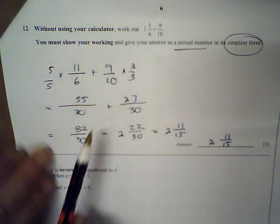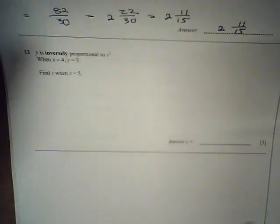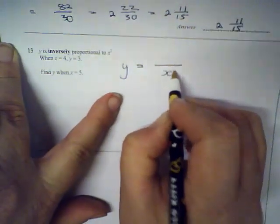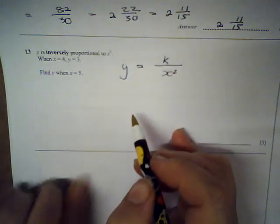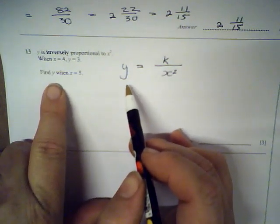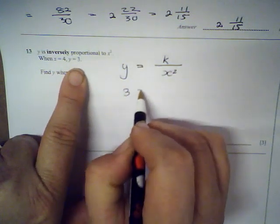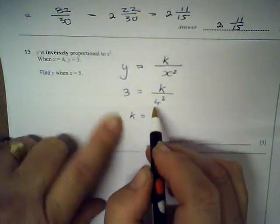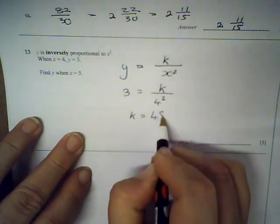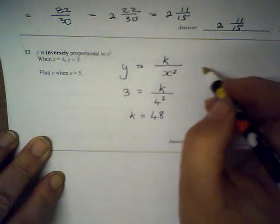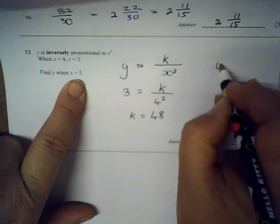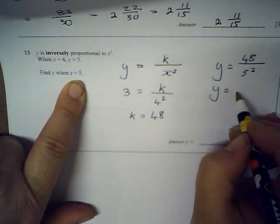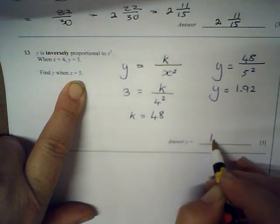y is inversely proportional to x squared, so y = k/x². When y = 3 and x = 4: k = 3 × 4² = 48. Find y when x = 5: y = 48/5² = 48/25 = 1.92.